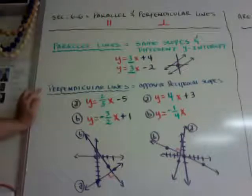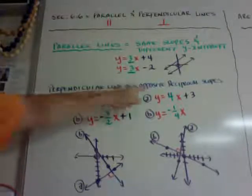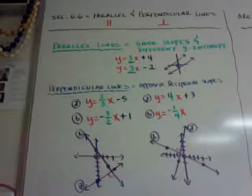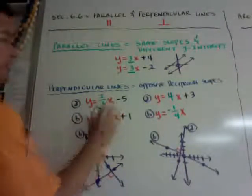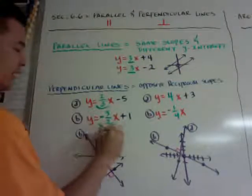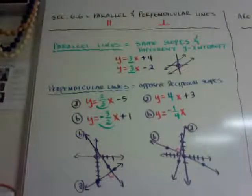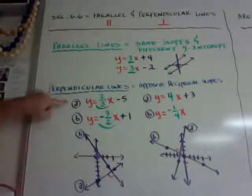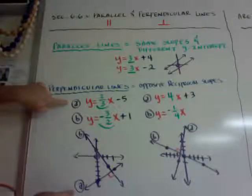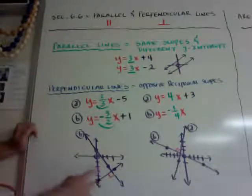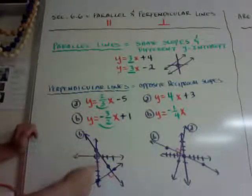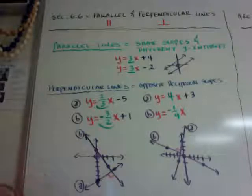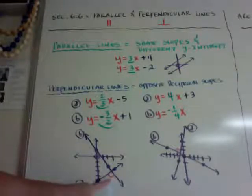Perpendicular lines is a little different. They have opposite reciprocal slopes, which means you have to flip it and change the sign. For example, if I have 2 thirds here, the opposite reciprocal is negative 3 halves. Line A is 2 thirds x minus 5 — start at negative 5, go up 2 and over 3. Line B starts at 1 and goes down 3 and over 2. When I draw them, I form a 90-degree angle, which means it's perpendicular.